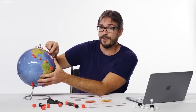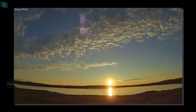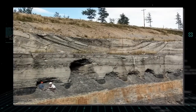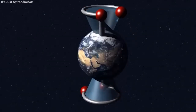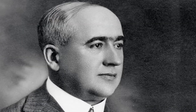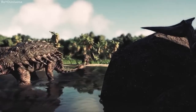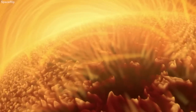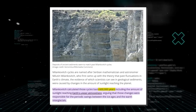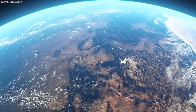Scientists can now simulate Earth's Milankovitch cycles millions of years in the past and future and compare their results to evidence found in geological sediments all over the world. Milankovitch cycles are named after Serbian mathematician and astronomer Milutin Milanković, who proposed that past variations in Earth's climate evidenced by geological sediments were caused by changes in the amount of sunlight reaching the planet. Milanković calculated those cycles back 600,000 years.